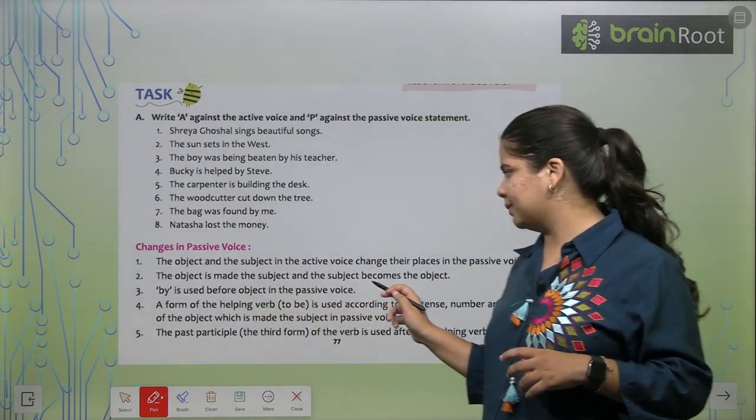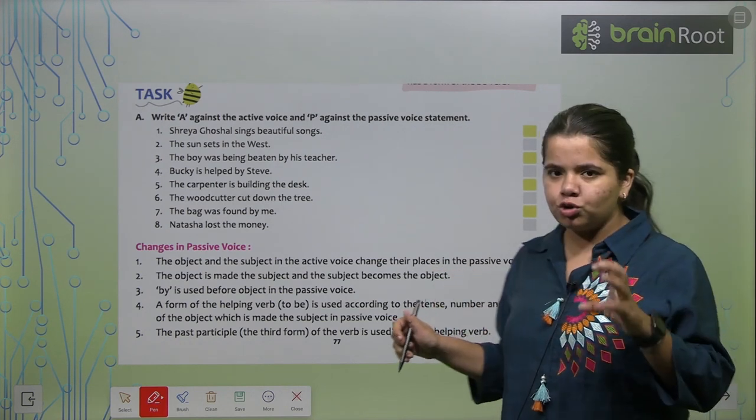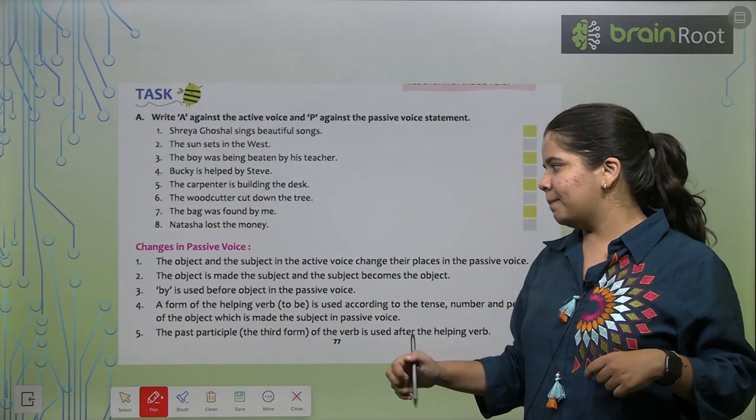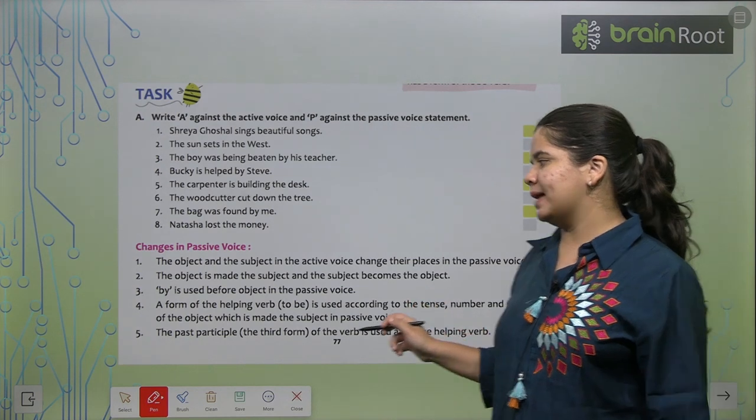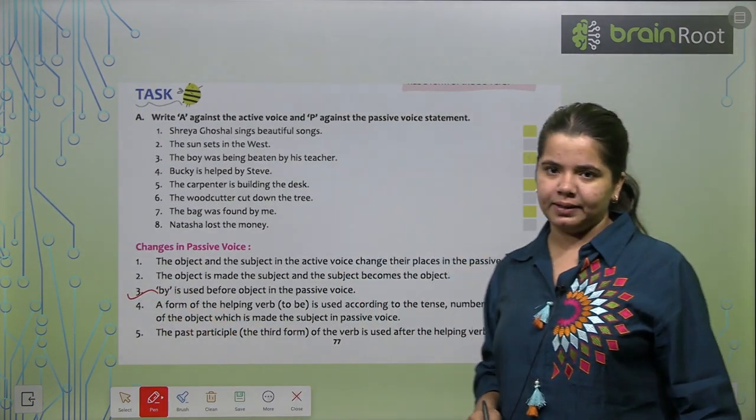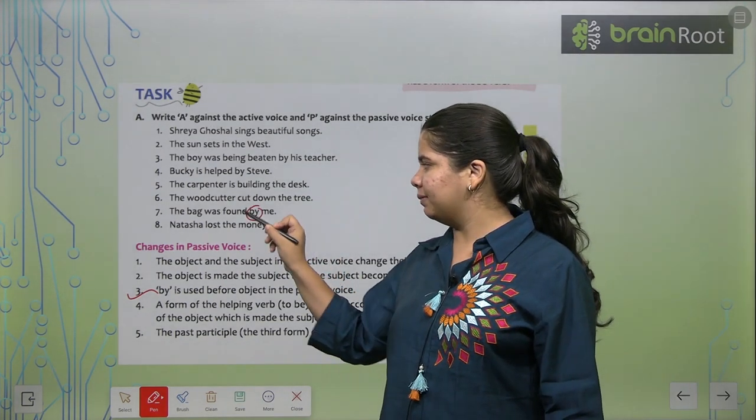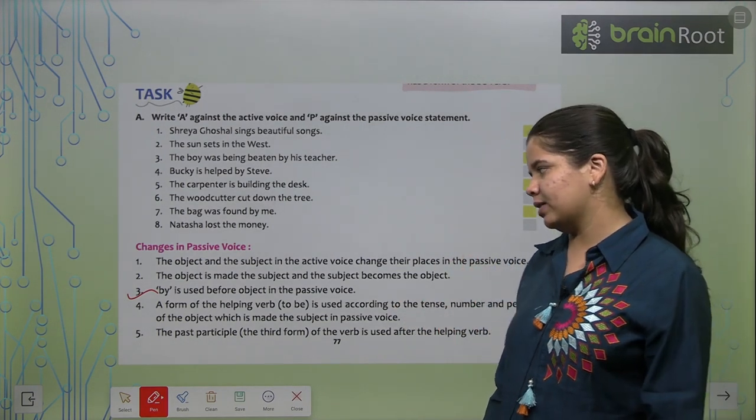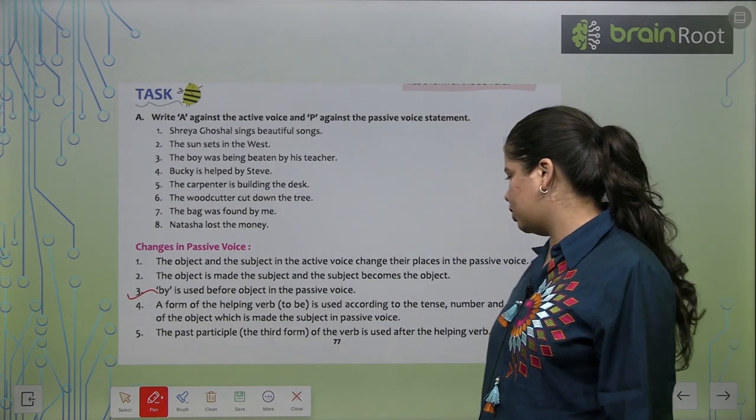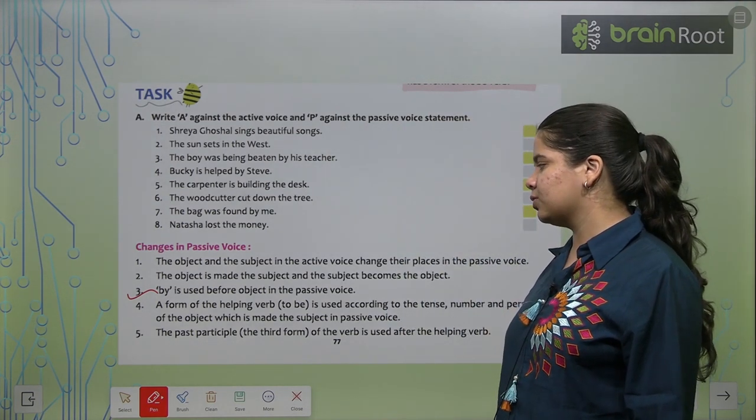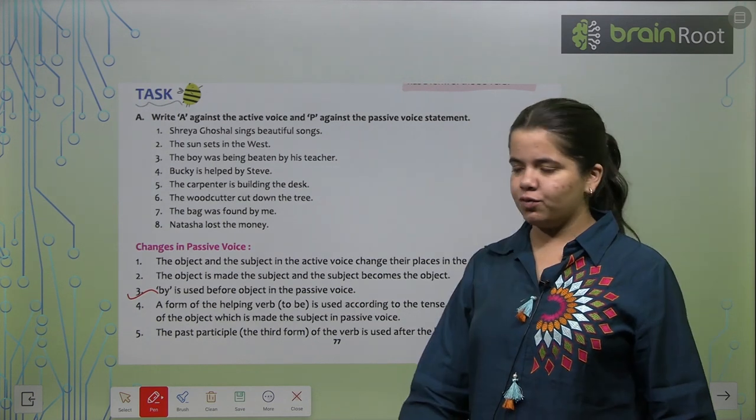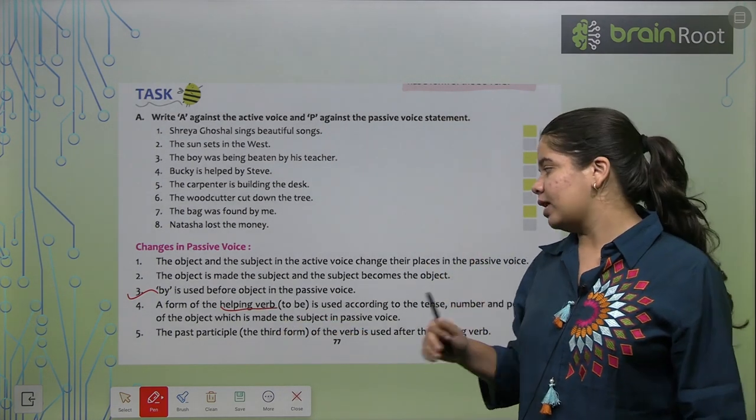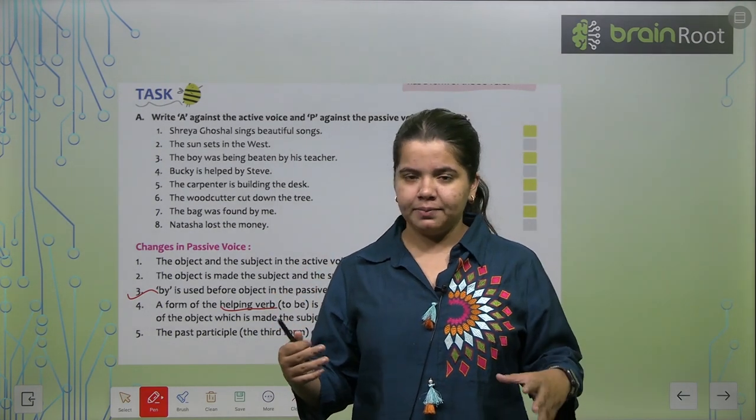Next, the object is made by the subject. The subject becomes the object. So the object becomes the subject and the subject becomes the object. This is pretty obvious, we just saw. By is used before the object in the passive voice. When we talk about passive voice, the word by comes. For example, the bag was found by me. So when we change to passive voice, usually we have the addition of the word by. The form of the helping verb is used according to the tense, number, and the person of the object which is made the subject in passive voice.